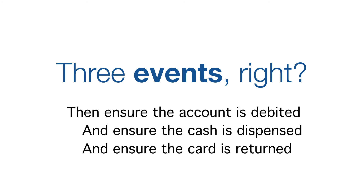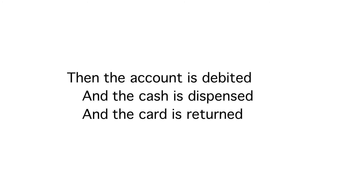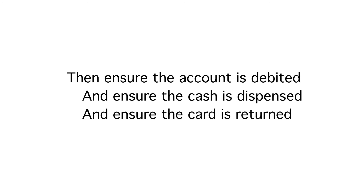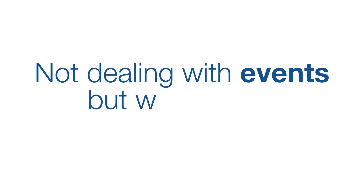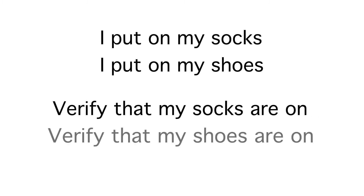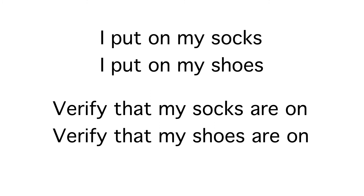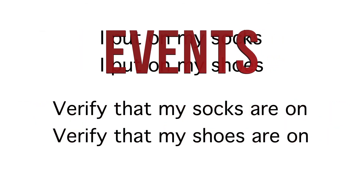I'm going to go out on a limb here and suggest that these are not events. When I borrowed this example for the cheat sheet, I took the liberty of dropping the word ENSURE from the last three items. I now think that the word ENSURE is important — ensure that the events have happened. If I'm right, this distinction means that we're not dealing with events, but states. It's the difference between saying 'I put on my socks, I put on my shoes' and saying 'Verify that my socks are on. Verify that my shoes are on.' Can you see that the first two have to happen in order, and the second two could happen in any order? That's the difference between events and states.